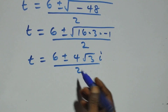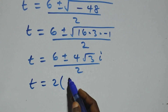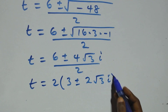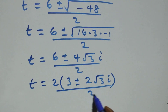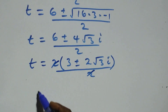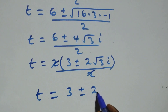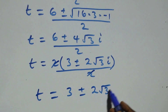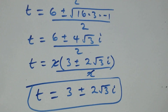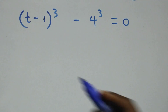Since 2 is common, we can write t = 2(3 ± 2√3·i) / 2. The 2s cancel and we get t = 3 ± 2√3·i. So here we have two complex solutions.